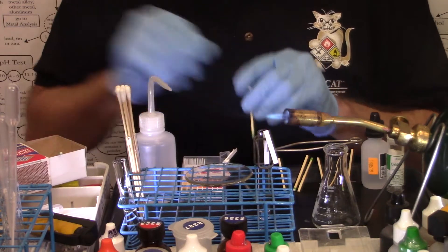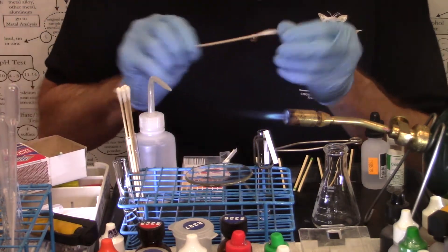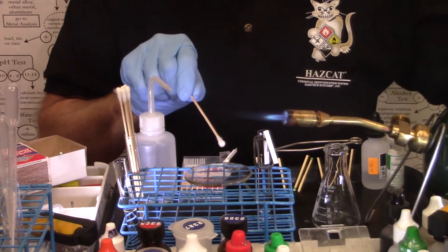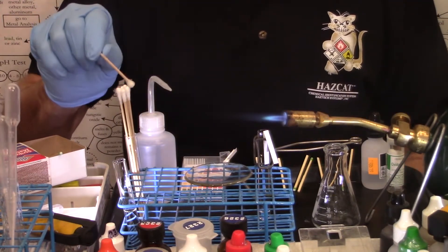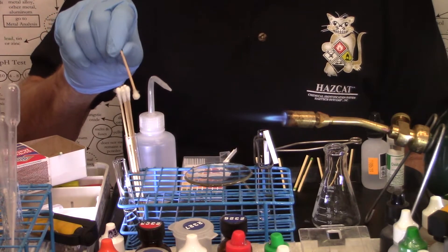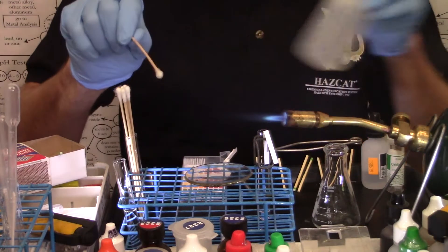We'll start out by taking a cotton swab, rolling it in the unknown liquid and then four inches away from the tip of the inner blue cone, I'm going to put the swab into the heat and roll it back and forth, gently.